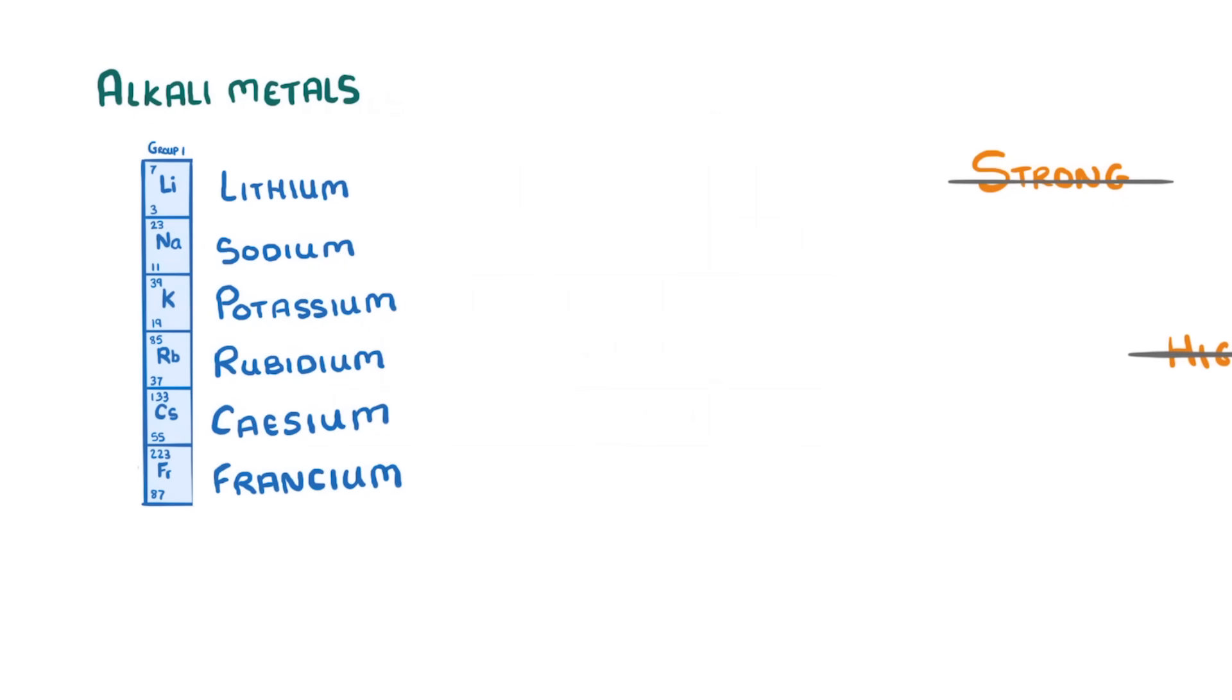Instead of being strong, having a high density, and having a high melting point, like you expect of a metal, the alkali metals are in fact relatively soft, with low densities and low melting points.